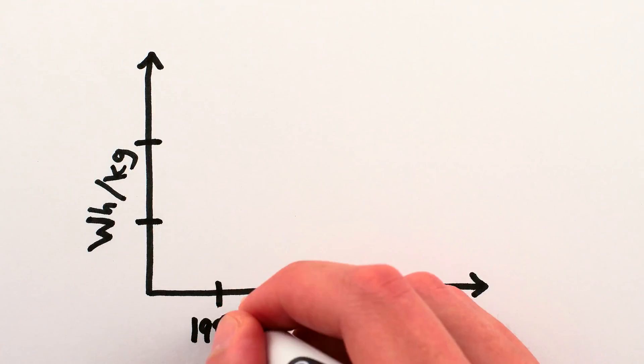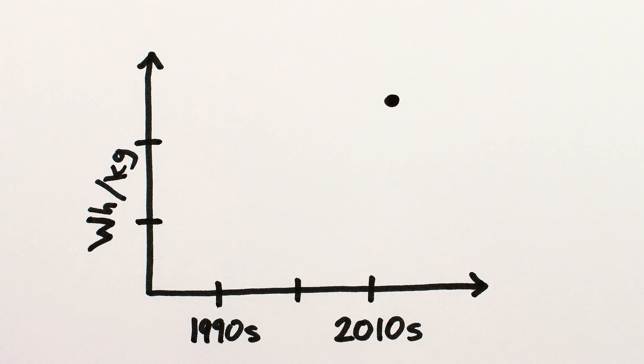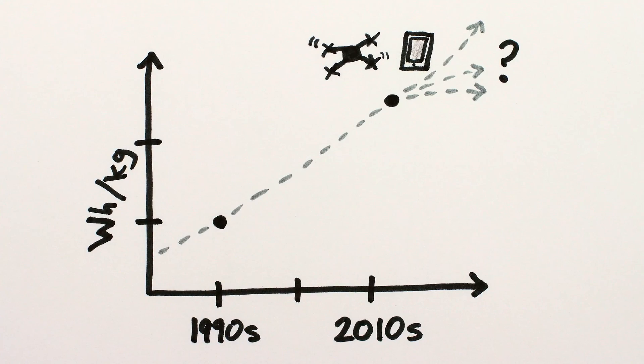Okay, so batteries have been getting better and better, and nowadays they can store over twice as much energy per kilogram as in the 1990s, which means that they're half the weight for the same energy stored, hence all the drones and smartphones. So what's the limit to this trend?